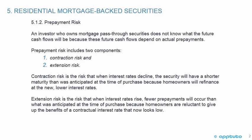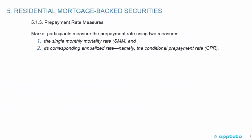Extension risk is the risk that when interest rates rise, fewer prepayments will occur than what was anticipated at the time of purchase because homeowners are reluctant to give up the benefits of a contractual interest rate that now looks low. Market participants measure the prepayment rate using two measures.